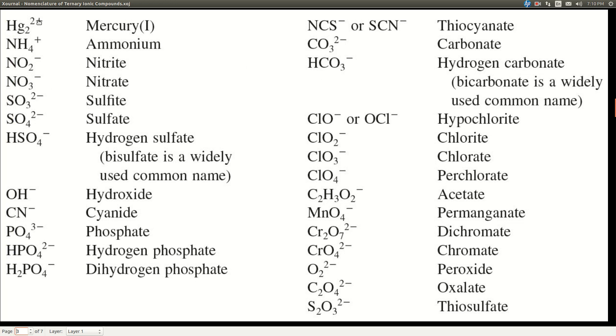In this table, there are only two cations, mercury one and ammonium, they're pretty uncommon. And so the thing is, okay, first of all, memorize this table.